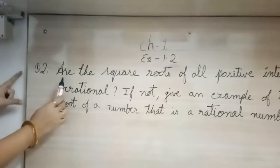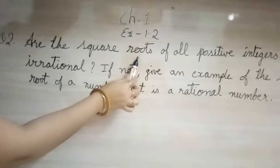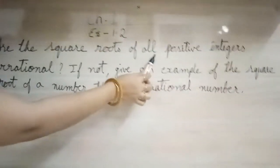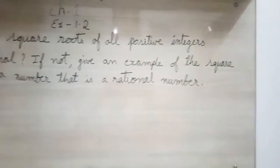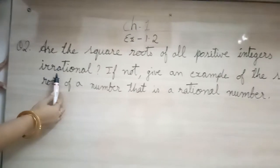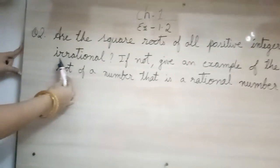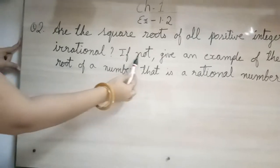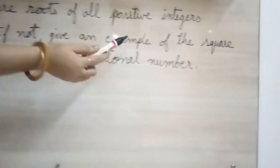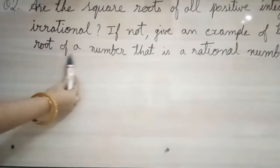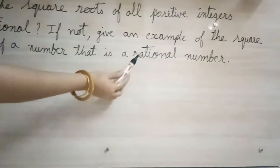Question number 2, they are asking are the square roots of all positive integers irrational? If not, give an example of the square root of a number that is a rational number.